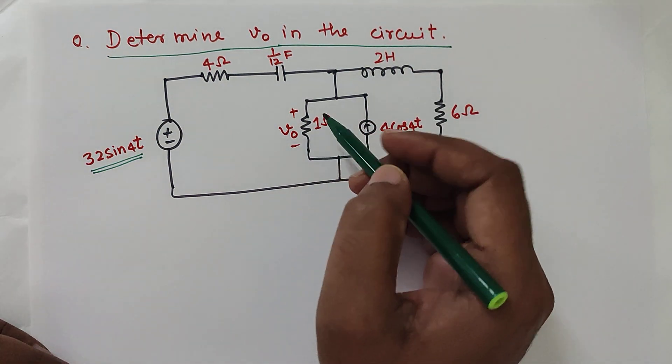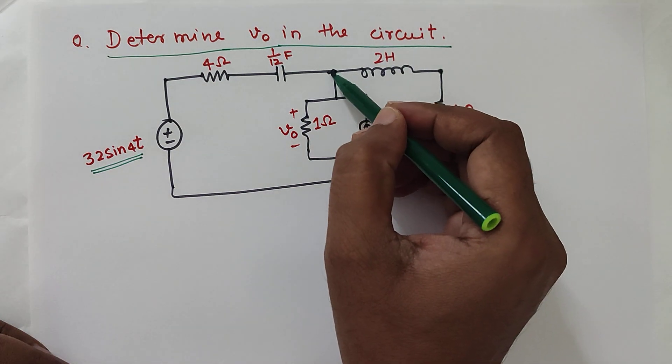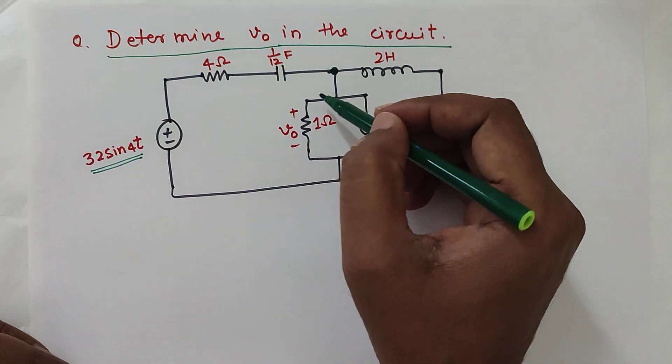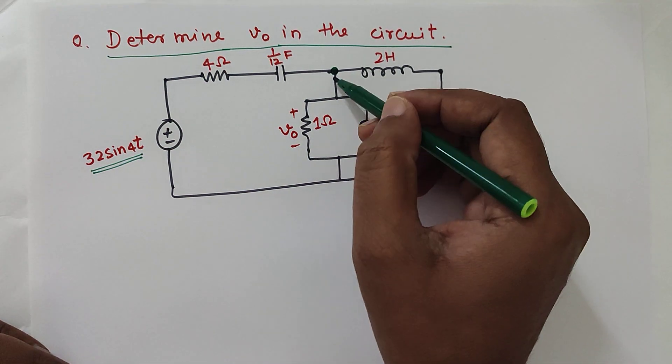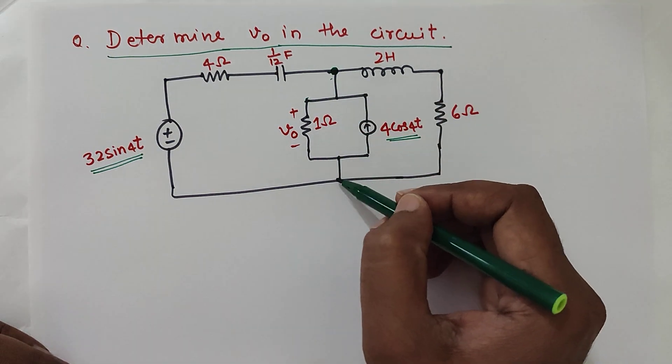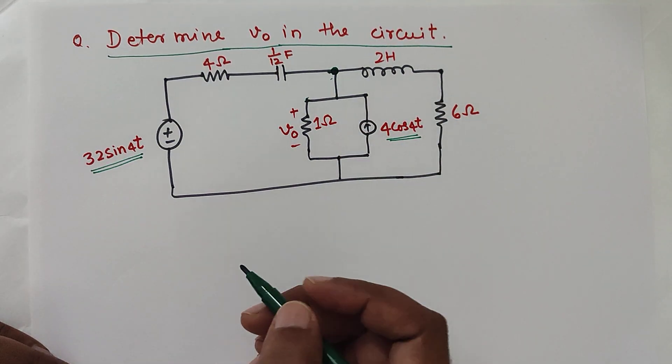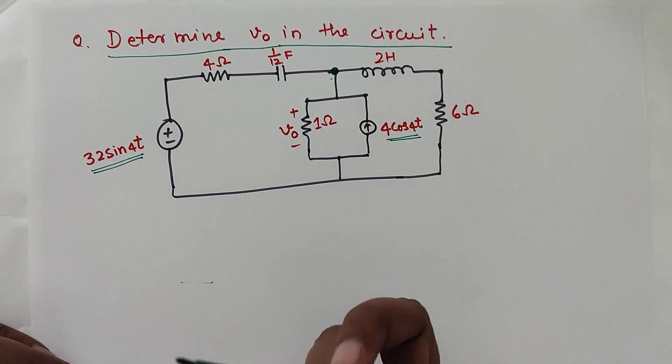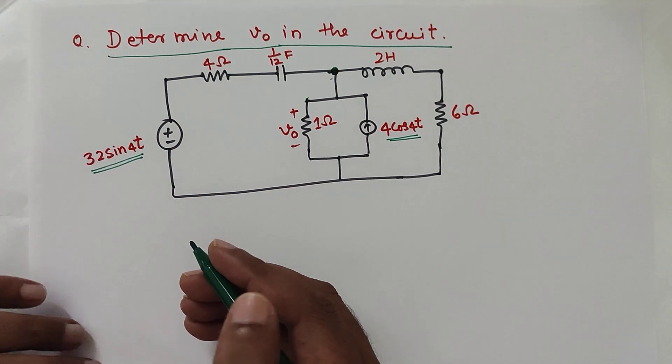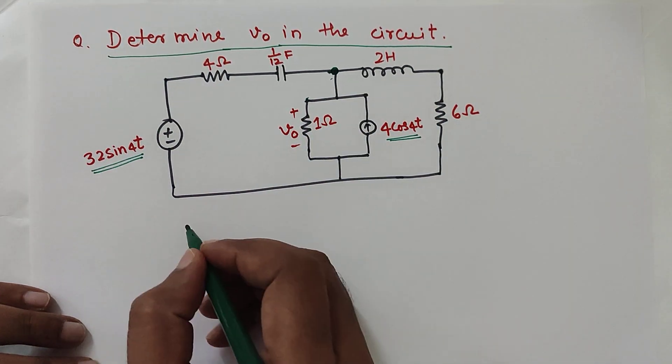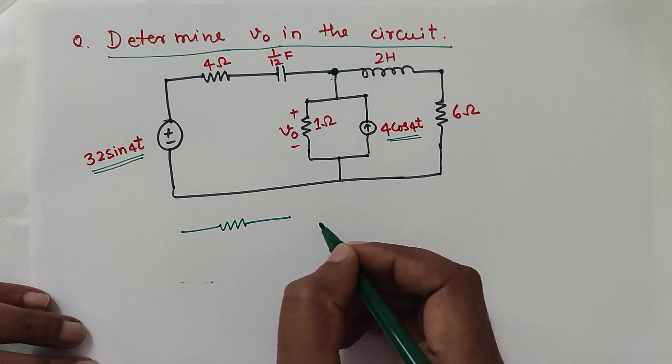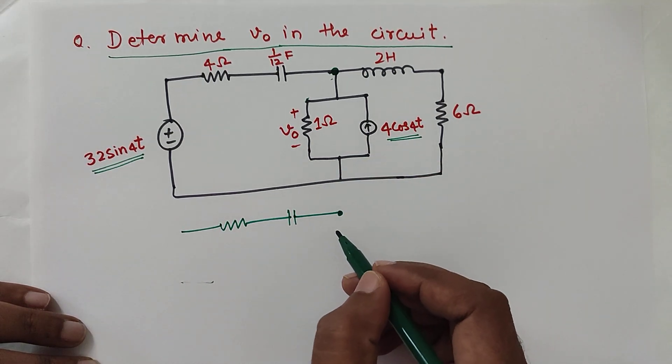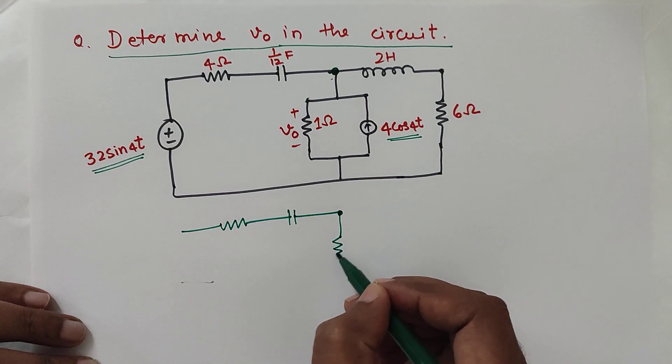First of all, to do the nodal voltage analysis, we should have the nodal voltage. Here if I redraw the circuit between these two terminals, since these two terminals are same and these are also same, I can redraw the circuit so that we will have connecting branches at the nodes and then we will write the KCL for that node. Let us redraw the circuit and also find out what is the corresponding reactance of the capacitor and the inductor.